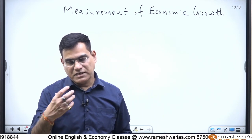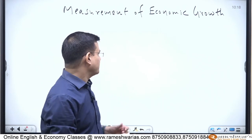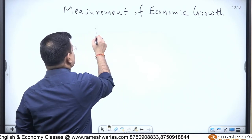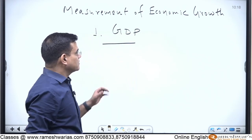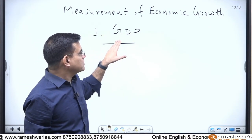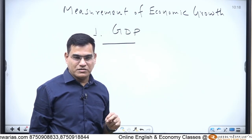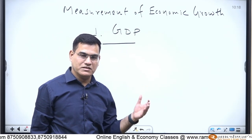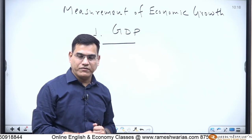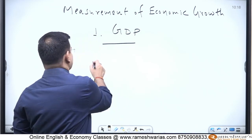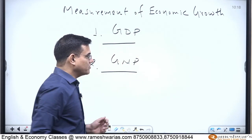A multiplicity of concepts are used for measuring economic growth trends, but the most popular in the world is GDP. Most countries use GDP — gross domestic product — to measure economic growth. But there are some economists who say that GDP is not the proper way of measuring economic growth; rather, GNP is the best way.